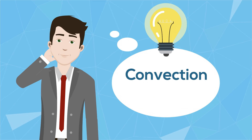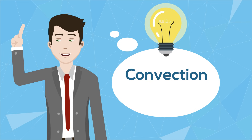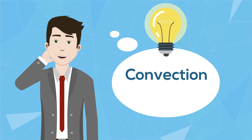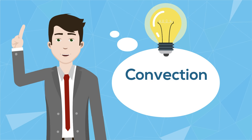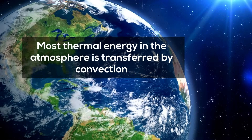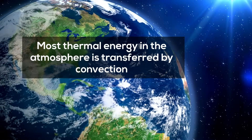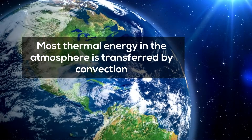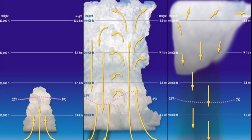Convection is the transfer of thermal energy by circulation or movement of a liquid or gas. Most thermal energy in the atmosphere is transferred by convection. For example, as air is heated, it becomes less dense and rises. Cool air is denser, so it sinks.